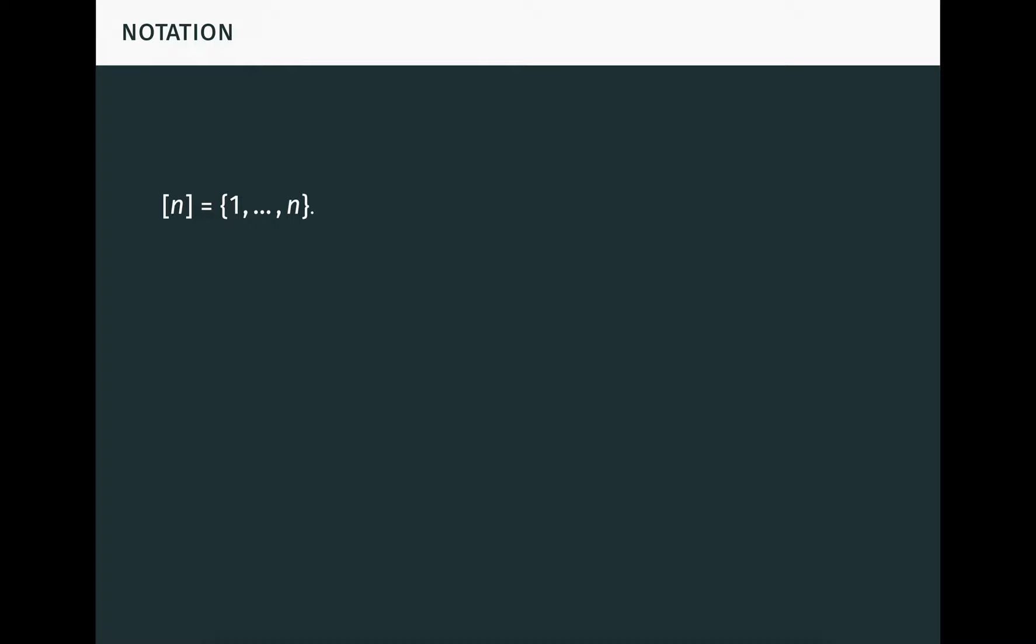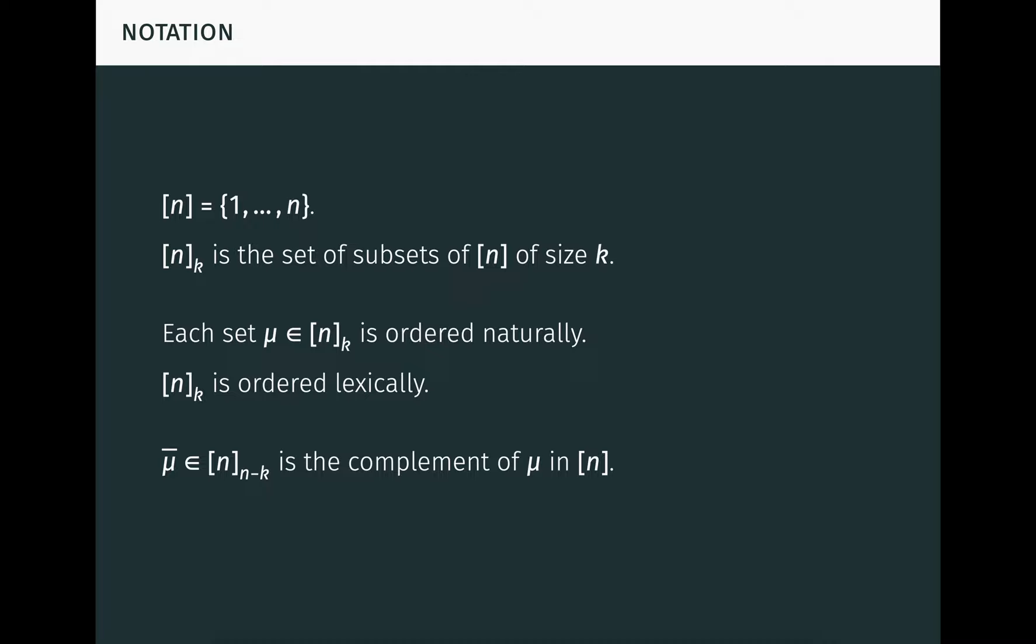First we recall some basic notation. We write n with square brackets for the set of integers from 1 to n, and just call it n. We write nk for the set of subsets of n of size k. nk has size n choose k, that is, the number of ways to choose k elements from n elements. Each set mu in nk, being a set of integers, is ordered naturally. The set nk itself is ordered lexically, like a dictionary. To determine the relative ordering of two sets in nk, we start by comparing their first elements. The set with the smallest first element comes first. If the first elements are equal, then we compare the second elements to see which comes first, and so on.